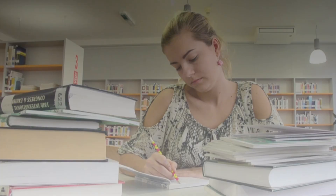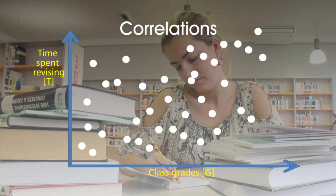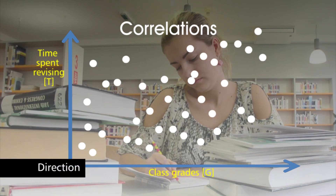Imagine we're looking at whether there is a relationship between the time students spend revising T and their grades in class G. Data are displayed on a scatter graph like this, and two key words you need to remember with correlations are direction and strength.